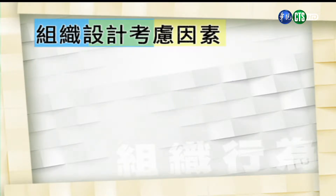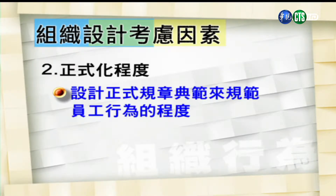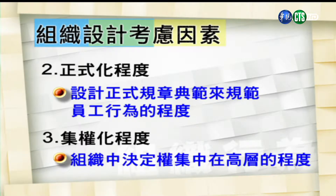第二，组织结构的正式化程度，是指设计正式规章来规范员工行为的程度。第三，组织结构的集权化程度，是指组织中决策权集中在高层的程度。